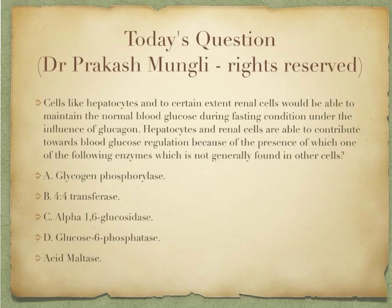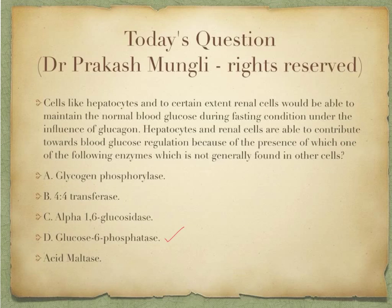Hepatocytes and renal cells have a specialty in terms of glycogen breakdown during fasting under glucagon's influence. Glycogen is broken down into glucose-1-phosphate, which is converted to glucose-6-phosphate, and then glucose-6-phosphate is converted into glucose. The enzyme that performs this final conversion is glucose-6-phosphatase, which is specially present in hepatocytes and, to a certain extent, in renal tubular cells. This also applies to the final step of gluconeogenesis in hepatocytes.